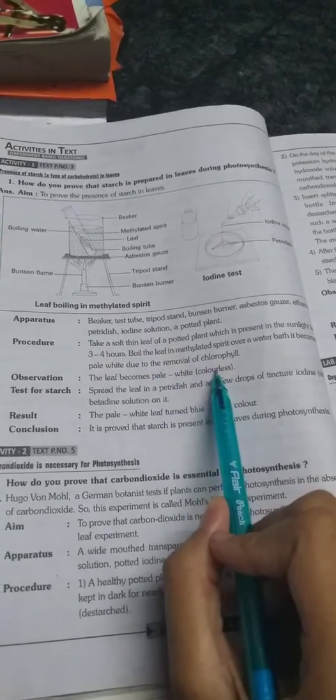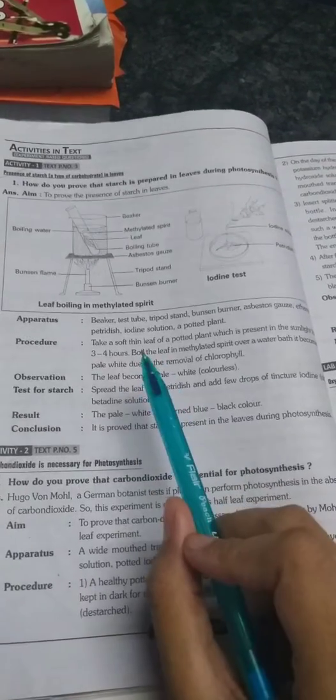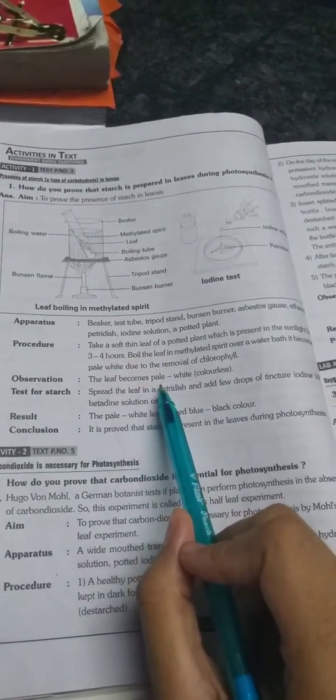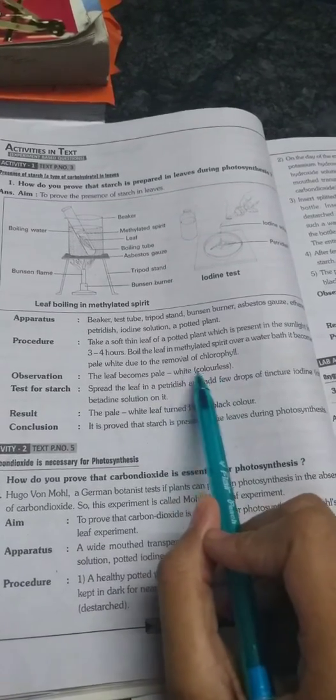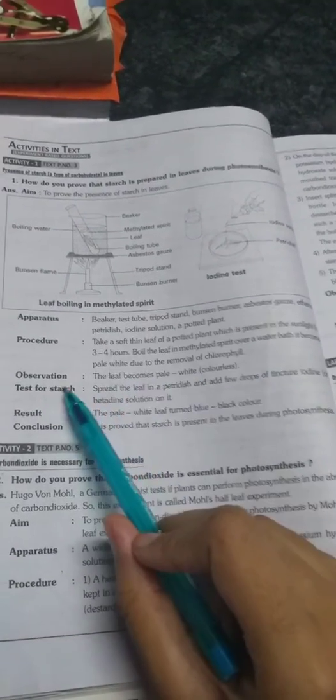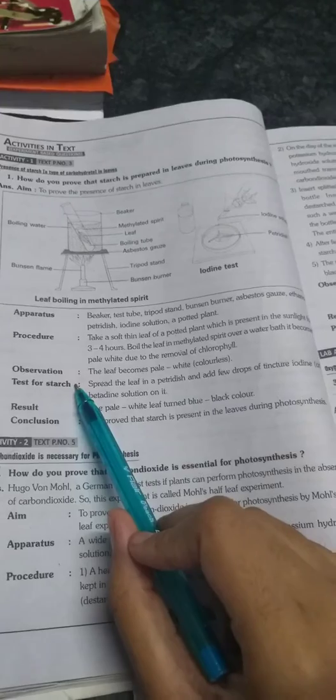from green to pale white. So what is our observation? The leaf becomes pale white. Pale white means it becomes colorless. Now we'll do this test for starch. What are we doing for the test for starch?